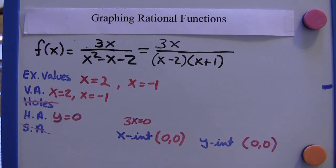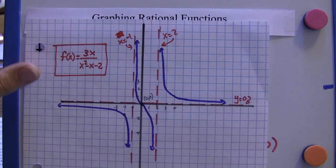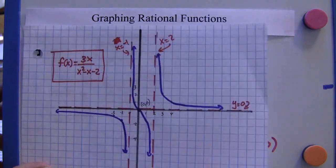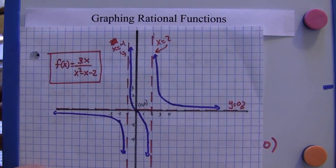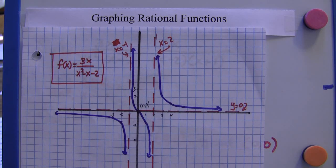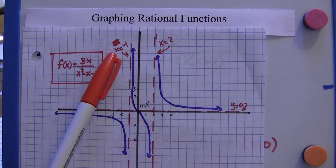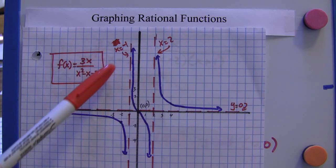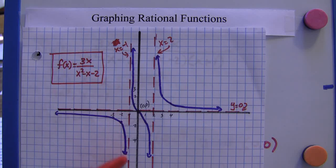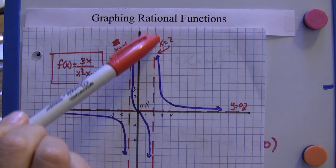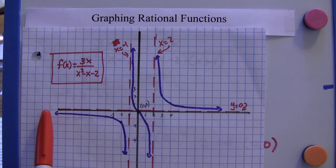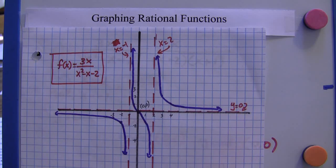So let's put all this together into the form of a graph. And we have a graph that's going to look like this. It's going to have an asymptote at x equals negative 1, another asymptote at x equals 2, vertical asymptotes. We're going to have a horizontal asymptote here at y equals 0.